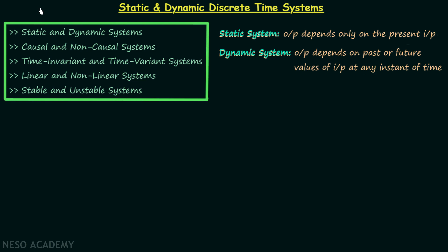We have completed the basic system properties of continuous time systems and now from this lecture we will begin our discussion on basic system properties of discrete time systems. In this particular lecture we are going to understand how to find out if the given discrete time system is a static system or a dynamic system. Therefore we are going to have a discussion on static and dynamic discrete time systems.